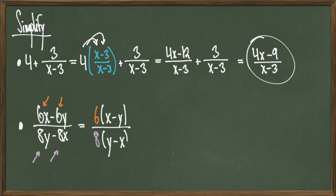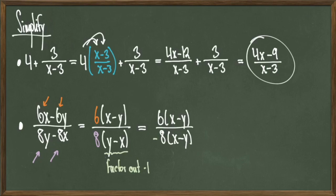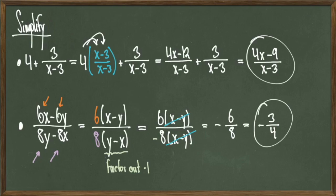The way that I can get these terms to match is look at y minus x in the denominator and factor out a negative 1. If I do that, I get a revised equation of 6 times x minus y over negative 8 times x minus y. At this point, I can cancel out the x minus y terms from the numerator and denominator, which simplifies all the way down to negative 3 fourths, and we're done.